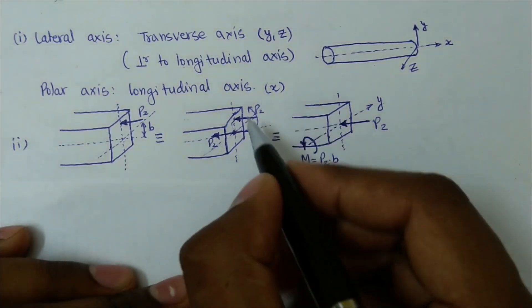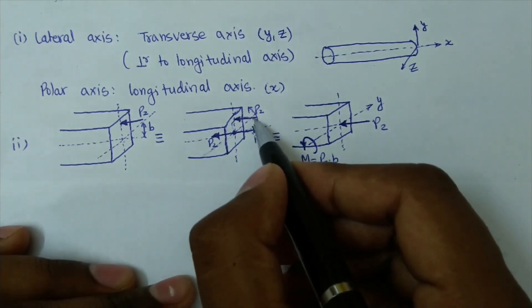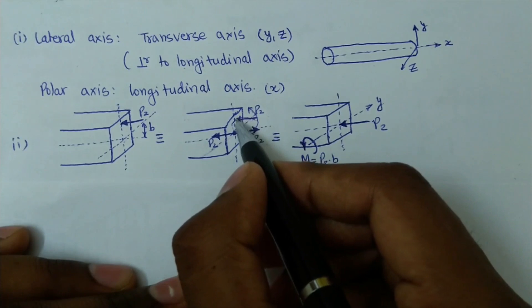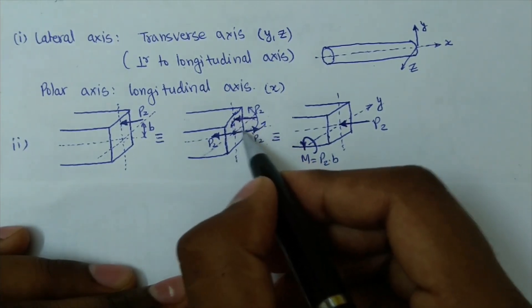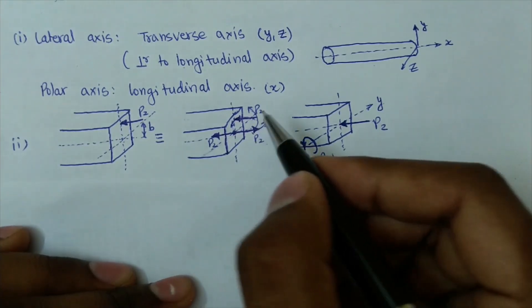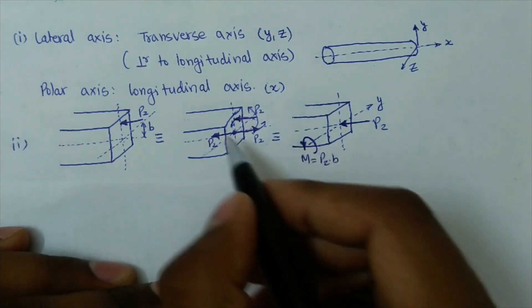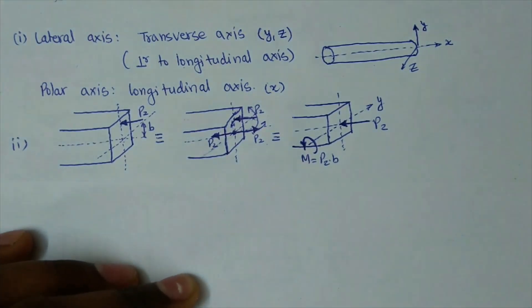The moment will be created by these two forces. One force tries to move in one direction and the other tries to move in the opposite direction, giving an anticlockwise direction of the moment. The remaining force stays there. That was about the equivalent force and equivalent moment of that particular force.